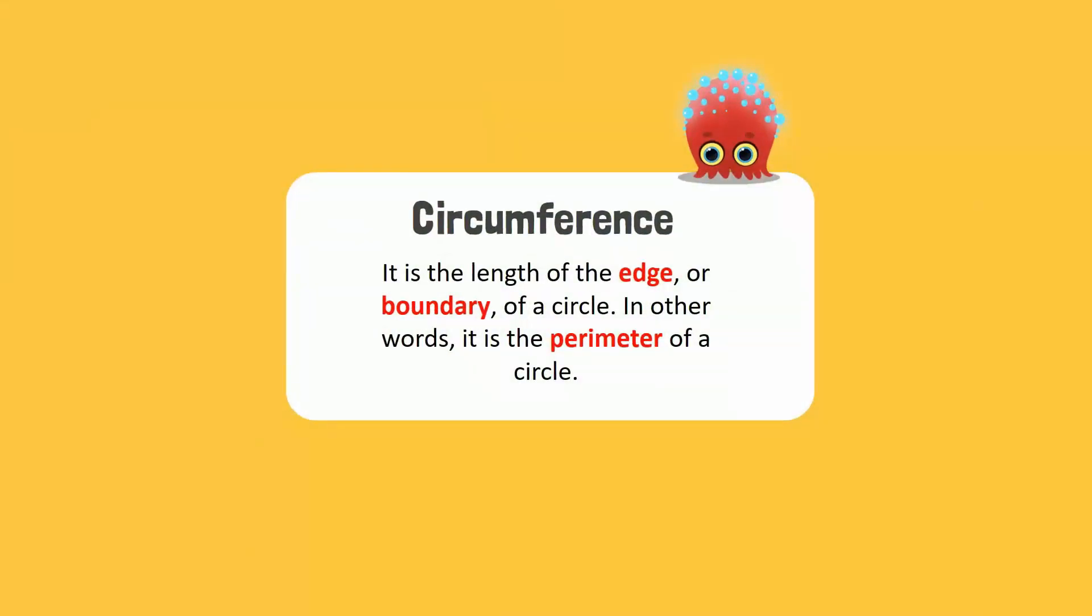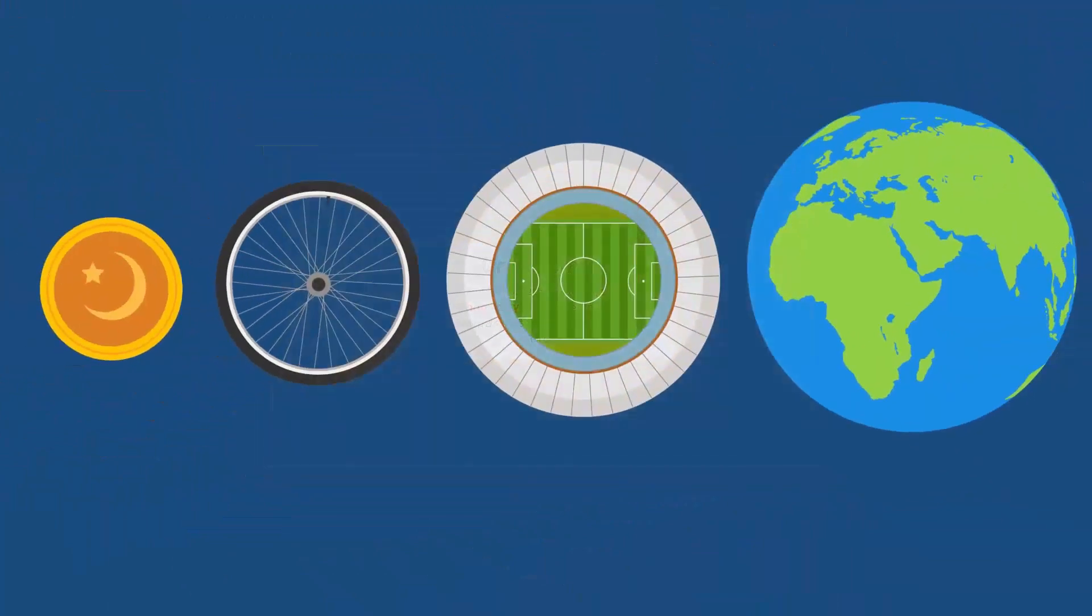Recall that the circumference of a circle is the length of the edge or boundary of the circle. In other words, it is the perimeter of a circle. Coming back to the question, whenever we divide the circumference of a circle by its diameter, we get the same value every time.